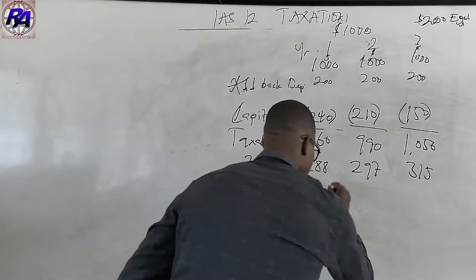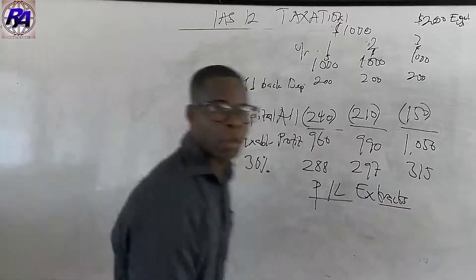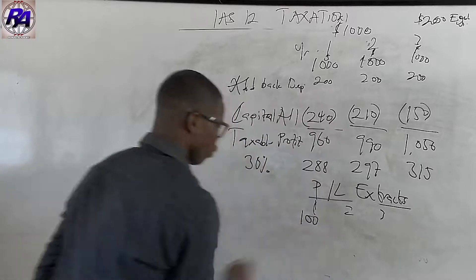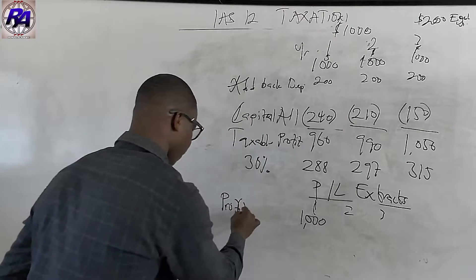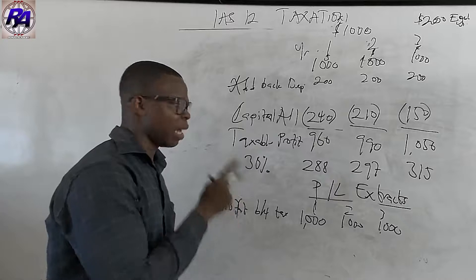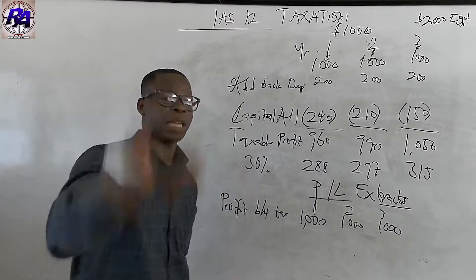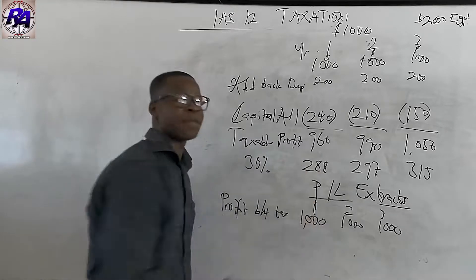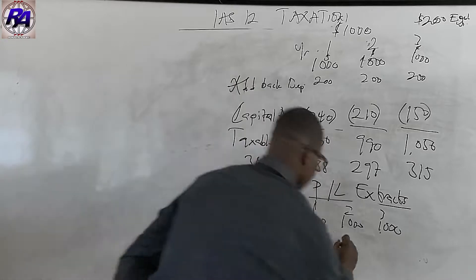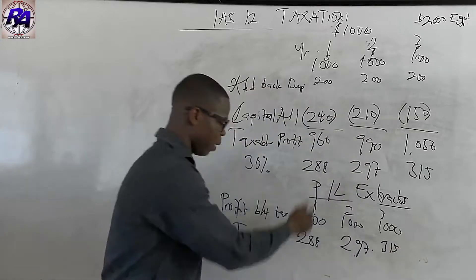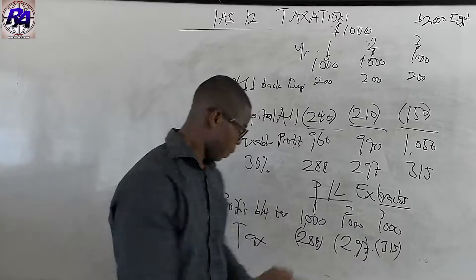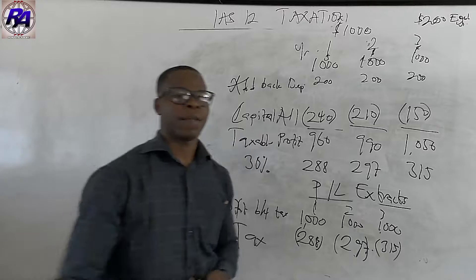When we go to the P&L extract for years one, two, and three, the profit before tax is $1,000 in each period. Because we are ignoring deferred tax, the tax charge is $288 in year one, $297 in year two, and $315 in year three. Deducting tax from profit gives us profit after tax. In scenario two, we will add deferred tax to current tax before deducting from profit.